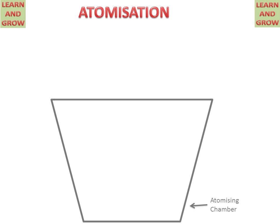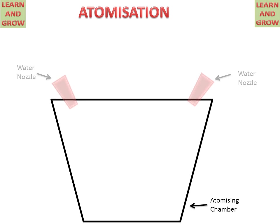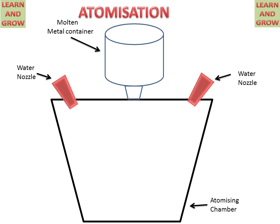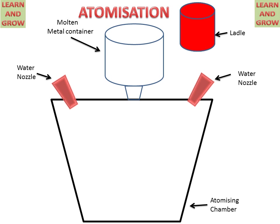What are the parts of atomization? We have an atomizing chamber, which is used for collecting powder form of molten metal. On the upper side, there are two nozzles which supply water, and a molten metal container for containing the molten metal. And a ladle, which is filled with molten metal and supplies molten metal to the molten metal container.